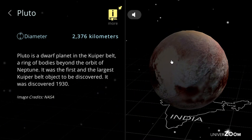Pluto, diameter: 2,376 kilometers. Pluto is a dwarf planet in the Kuiper Belt, a ring of bodies beyond the orbit of Neptune. It was the first and the largest Kuiper Belt object to be discovered. It was discovered 1930.